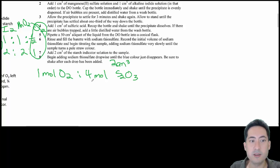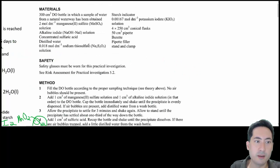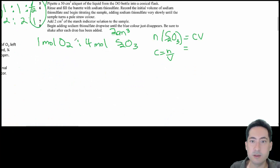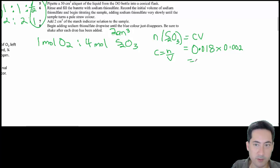The number of moles of thiosulfate, concentration equals number of moles on volume. So the number of moles equals concentration times volume. That concentration is here, so it's 0.018 moles per liter times 0.002. I'm not editing this out, so I'm just going to give you my calculations. 3.6 by 10 to the minus 5 moles of thiosulfate.